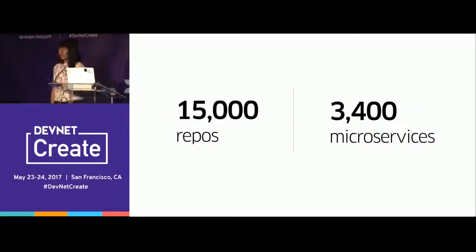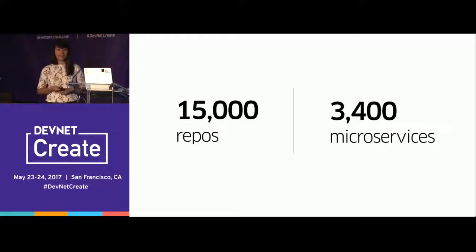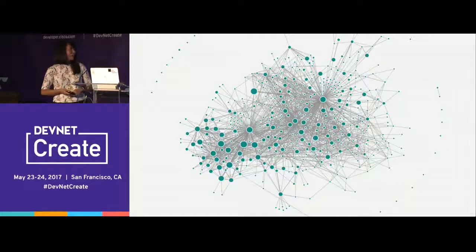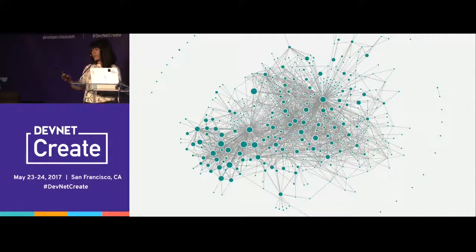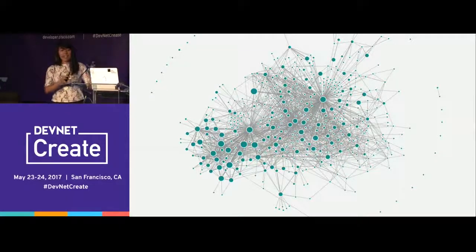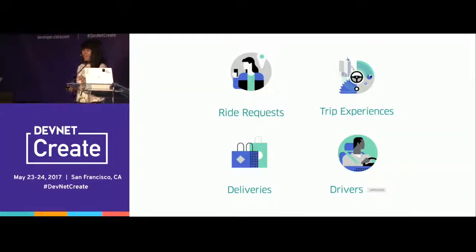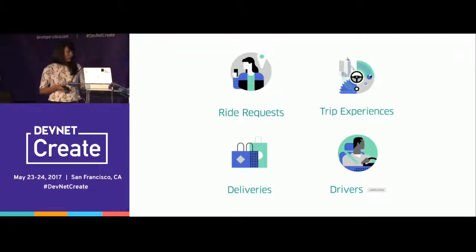We've taken the work of moving something from point A to point B safely and securely — 15,000 repos, 3,400 microservices, most written in Python and Node, some in Go. We've abstracted all of this complexity into very easy-to-use APIs. There are four major categories: ride requests, trip experiences, deliveries, and drivers. We'll get an overview of all of these in the context of an Uber trip, then dive deep into the trip experiences API.